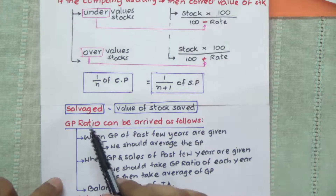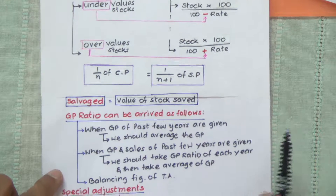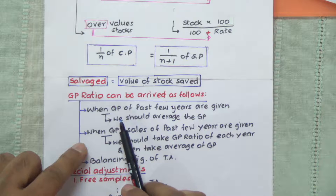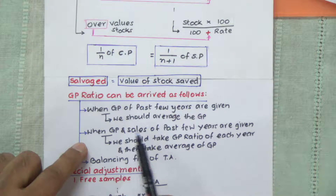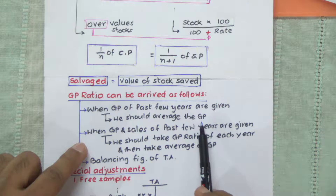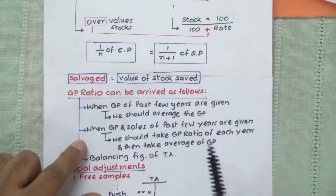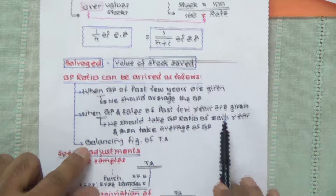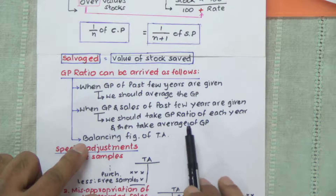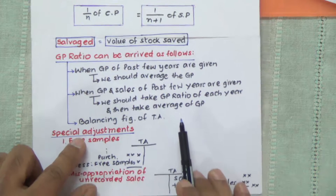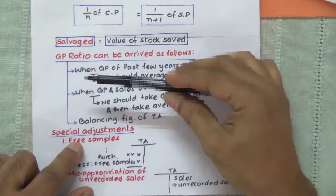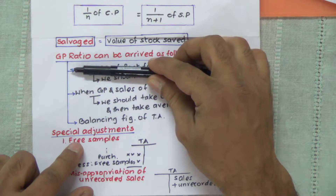The word 'salvaged' means value of stock saved. The GP ratio can be arrived at as follows. When the gross profit of the past few years is given, we should average the given gross profit and take the average gross profit for our memorandum trading account calculation. When the gross profit and sales of the past few years are given, we take the GP for each year and then average it. The third method is the balancing figure of the trading account. It could be any one of these methods depending on what is given in the problem.